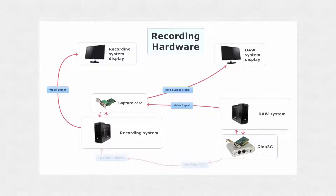I use line outputs one and two on the GINA to connect to the stereo line input on the recording system to provide the live audio. This audio is encoded at the same time as the video stream.